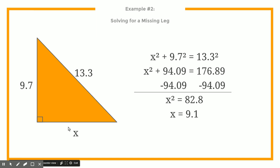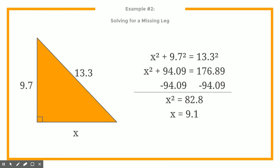Think about that — does it make sense? Is 9.1 smaller than our hypotenuse? Yes, that's good. If it were bigger, we'd know there's a problem. And it's a little bit smaller than the other side, which is fine. That tells us we probably did our math right, just by spot-checking to make sure the math makes sense.